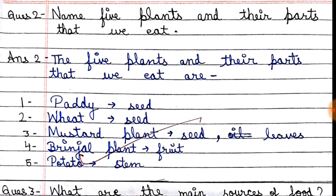Next question: name five plants and their parts that we eat. First, we eat seeds — rice and wheat. Next, mustard and leaves. We eat brinjal — that is the fruit. We also eat the stem.